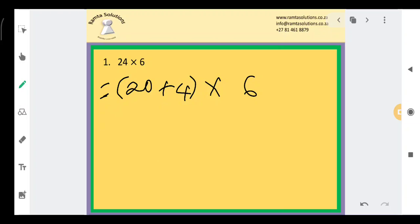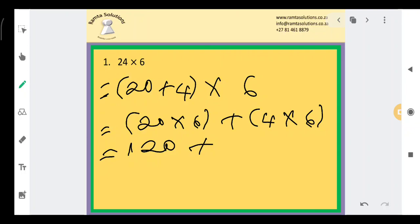Now as I continue, I will say 20 times 6 plus 4 times 6. I believe these numbers are easier to calculate, even by head. 20 times 6, I believe it's 120—yes, 2 times 6 is 12, so 20 times 6 is 120.